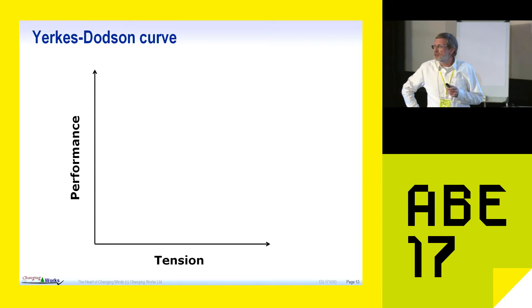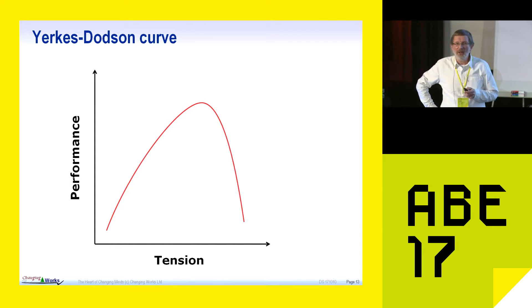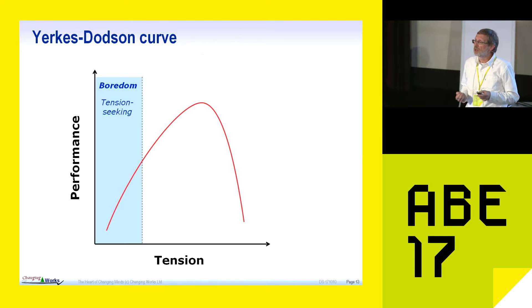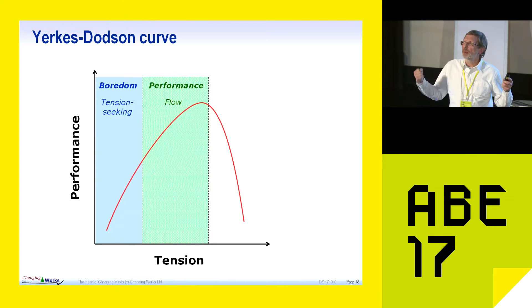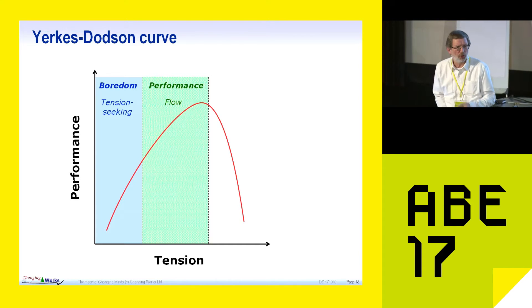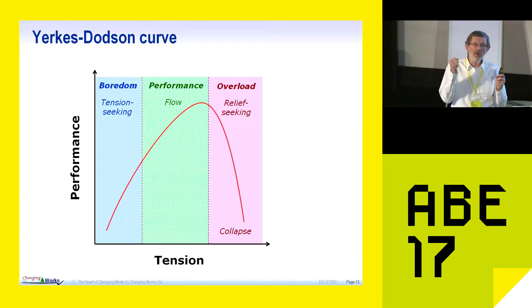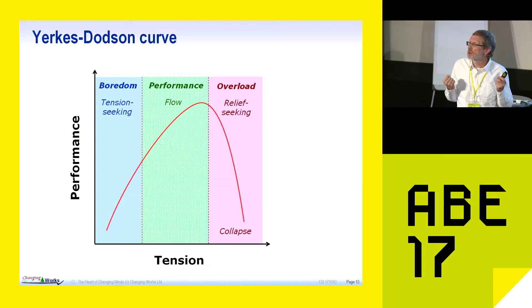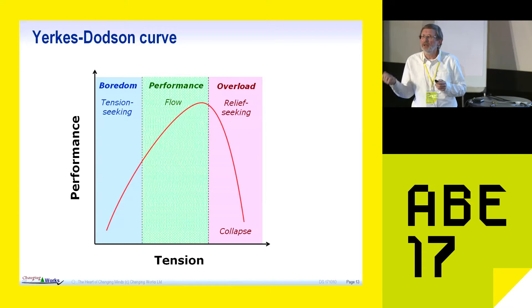You might have seen this one. This is the Yerkes-Dodson curve. Where you crank up the tension, performance goes up. And then too much goes down. The first bit is a bit of boredom. You know, we need tension in our lives. It's not a bad thing. We need it. If we haven't got enough, we're bored. We go out. We look for excitement, interest, something to do. There's a bit in the middle, which is about flow, which is where you're getting well into it. You're enjoying it. And at the other end, there's overload. When we're in overload, this is where we talk about stress. This is where we go relief-seeking. We'll do anything just to get the tension off us. And this is where dysfunction can happen. Because we're now not trying to meet our goals. We're just trying to get the tension off. And all sorts of other things can happen there, including it can kill you, literally.